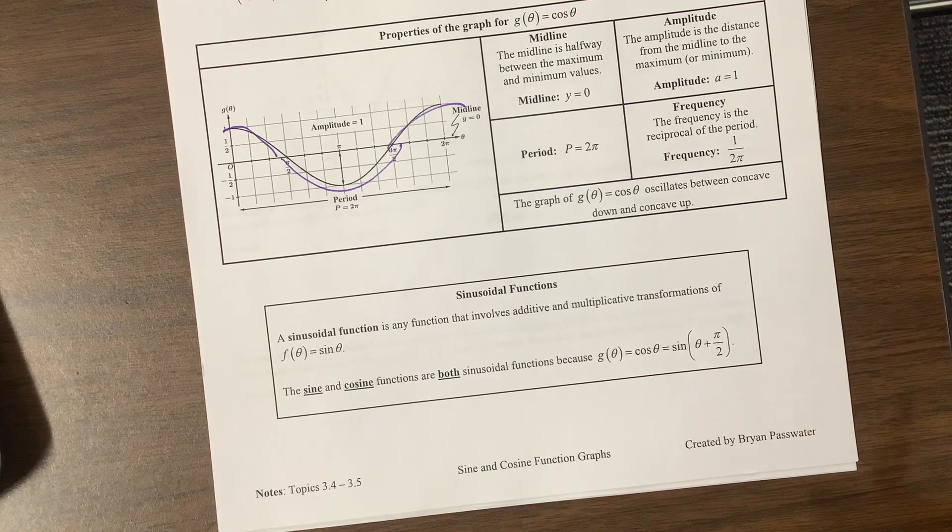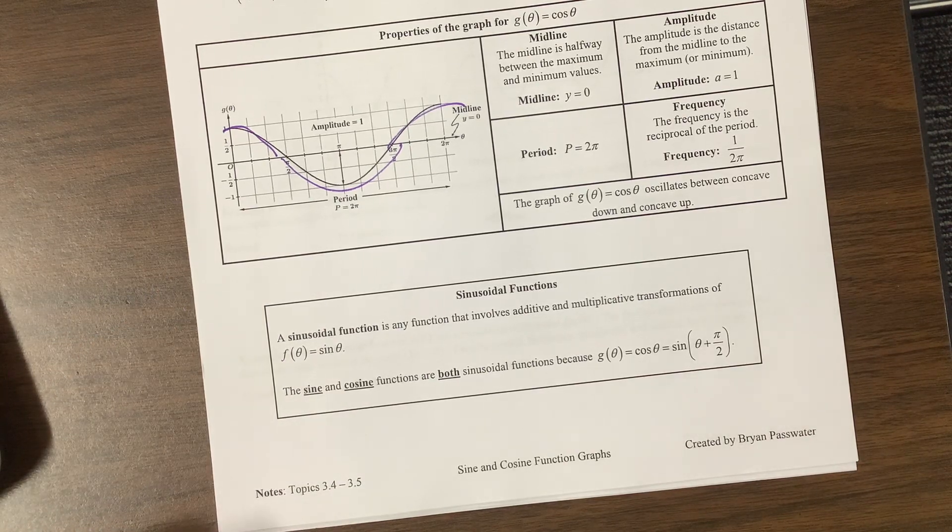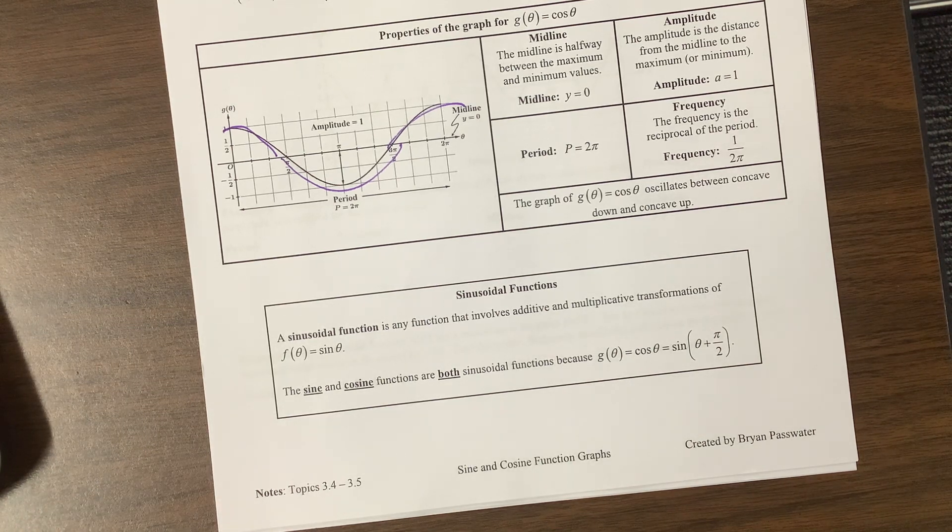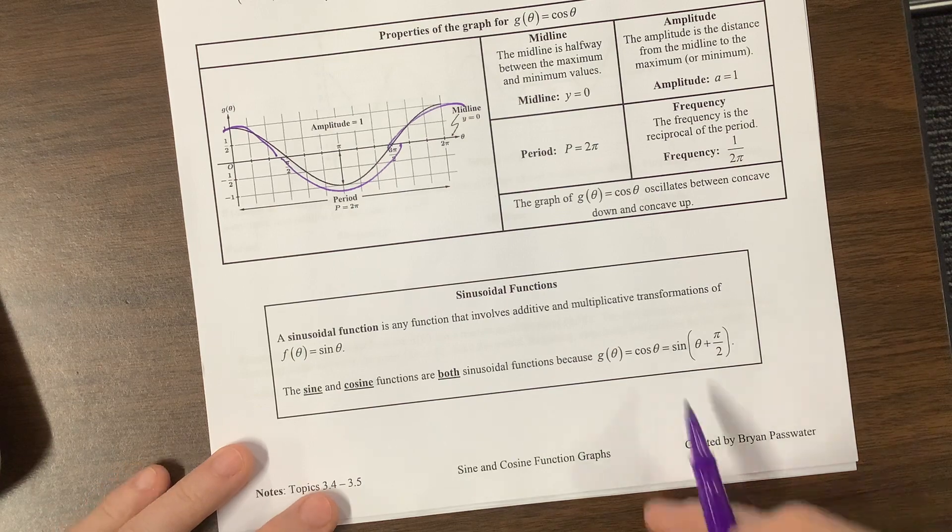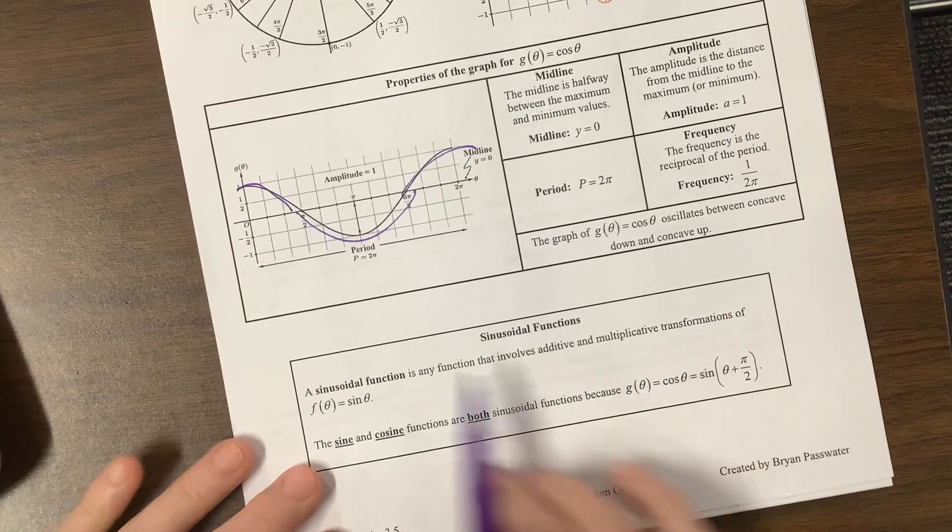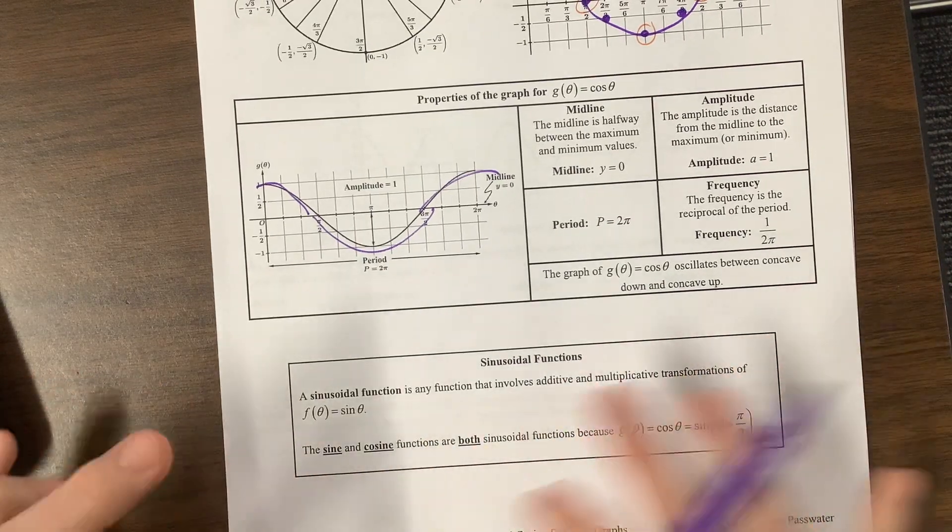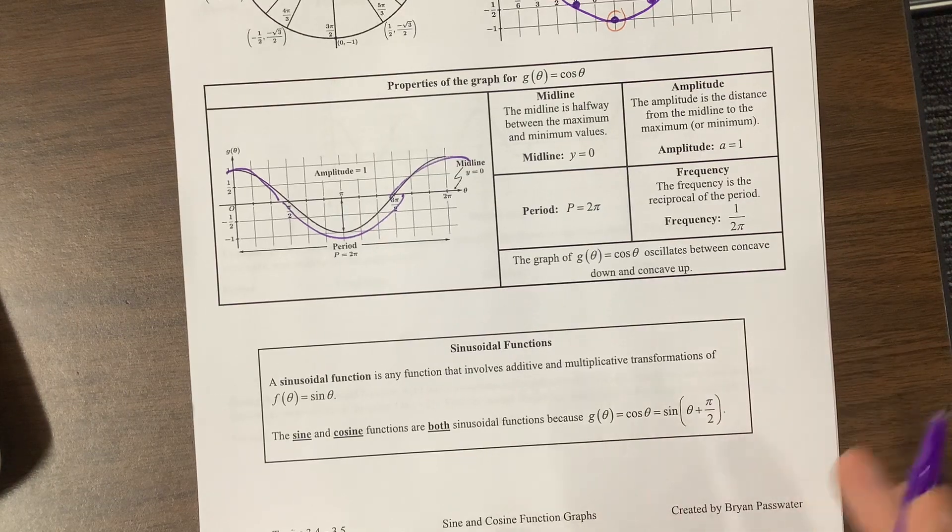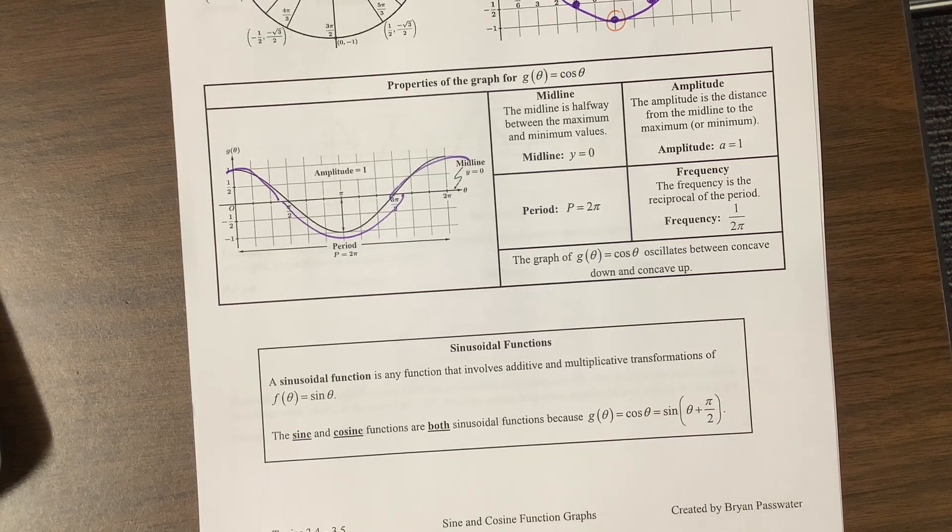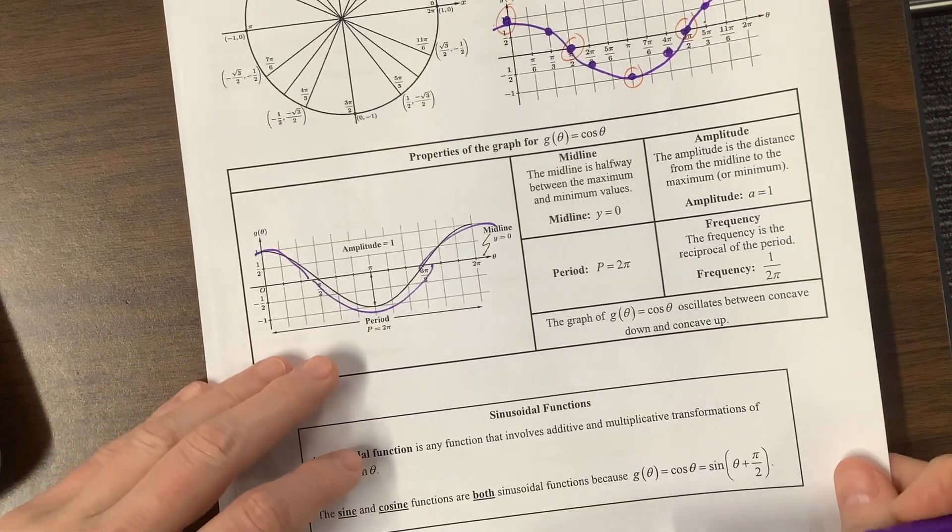Okay, let's see. Then he says, sine of soda function is any function involves addition and multiplicative transformations of this. Okay, of f of theta equals sine of theta. The sine and cosine functions are both sinusoidal functions because we can, okay, so basically what he's pointing out to you is that we can take this cosine curve and shift it a little bit and it becomes sine. So you can write, my kids are good at this point in the year of writing an equation. I give them a graph and they can write it as a sine function or as a cosine function. If you're new to this, you will figure out how to do that as we go.